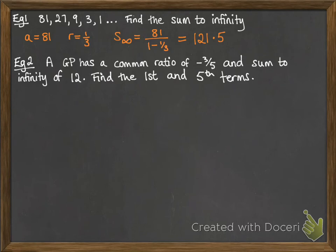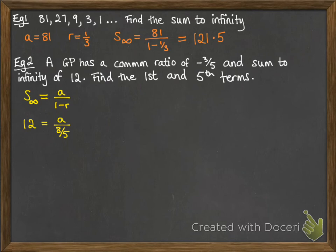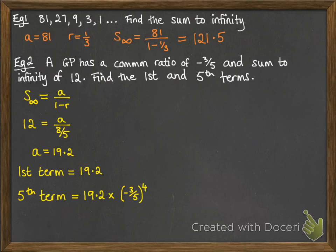Example number 2: we've got a GP with a common ratio of minus 3 fifths. Sum to infinity is 12, and we're going to find the first and the fifth terms. Our sum to infinity formula equals 12, and our ratio is minus 3 fifths, so 1 minus negative 3 fifths is 8 fifths. Rearranging that, we get a equals 19.2, so our first term is 19.2. Our fifth term will be 19.2 times our ratio to the power of 4, and that gives us 2.48832.